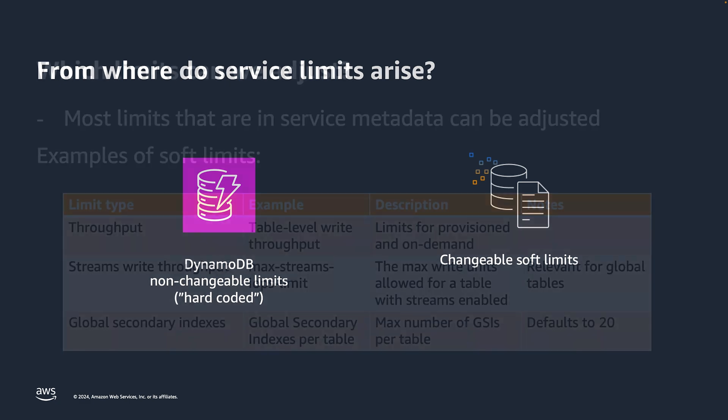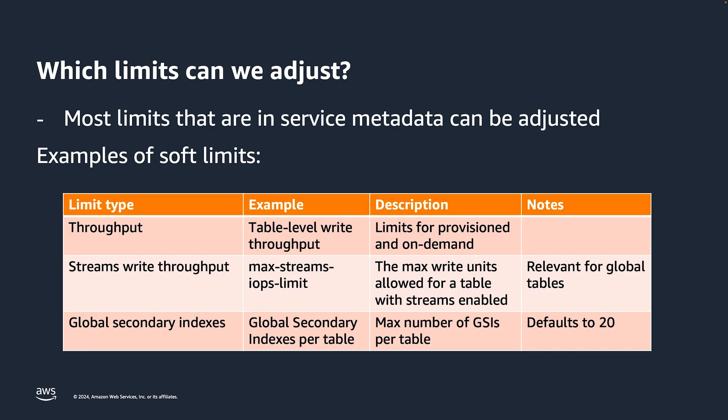You might be wondering which limits can we adjust. Many limits exist in service metadata and can be changed, and here you see some examples of soft limits in DynamoDB. You can request these to be changed one of generally two ways: either through the Service Quotas Console in the AWS Management Console, or through Support Center in some cases.